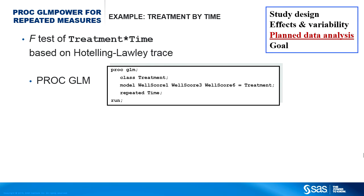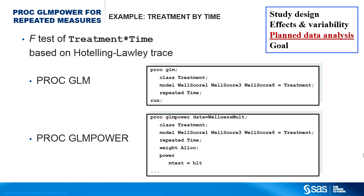Your planned data analysis is the Type 3 F-test of the treatment-by-time interaction based on the Hotelling-Lawley trace. You choose this analysis because it is reversible — equivalent to a mixed-model analysis with unstructured covariance using the Kenward-Roger degrees of freedom method. The PROC GLM statements use treatment as the class variable, three response variables for the wellness score at each time point, and time as the repeated factor. For the GLM POWER procedure, the class, model, and repeated statements are identical to those for PROC GLM. You specify the exemplary dataset with the DATA option, and the relative sample size allocation variable with the WEIGHT statement.